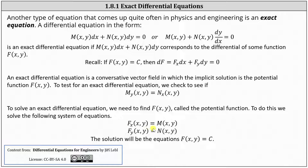To solve an exact differential equation we need to find F, called the potential function, by solving the system: the partial of F with respect to x equals M, and the partial of F with respect to y equals N. We can see where these equations come from by comparing dF and the differential equation — the partial of F with respect to x must equal M and the partial of F with respect to y must equal N. The solution will be F(x,y) = c.